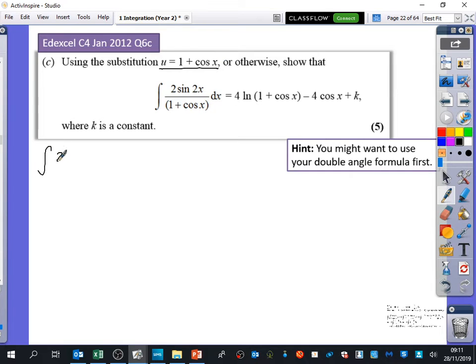So we have 2sin2x over 1+cosx dx. And it says you might want to use your double angle formula first. So the double angle formula for sine 2x, what is sine 2x the same as? 2sinx cosx. So the top will be 4sinx cosx all over 1+cosx dx. Now we've got it looking like this, we can actually get on with doing the substitution.